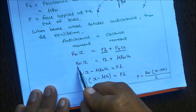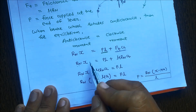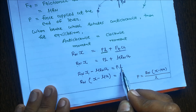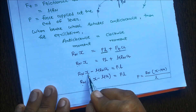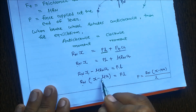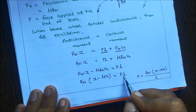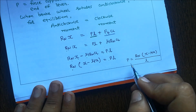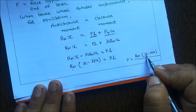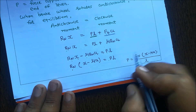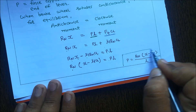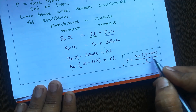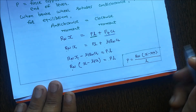Rewriting the equation: Rn·x = P·L + μ·Rn·A. Simplifying: Rn·x − μ·Rn·A = P·L, so Rn(x − μA) = P·L. Therefore, the effort required is P = Rn(x − μA) / L.